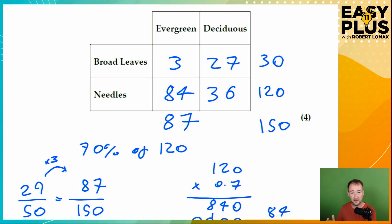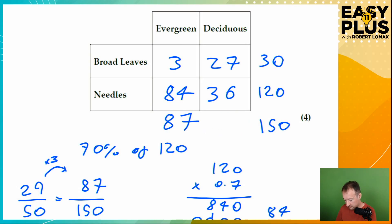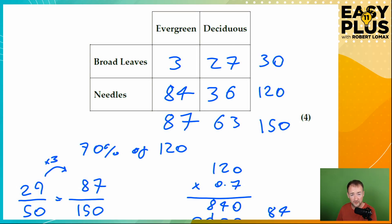Suddenly we have a completely filled-in table. We can also complete the total deciduous entry: 87 plus something equals 150, so that must be 63. That's a really useful cross-check — if we add 27 and 36, that gives us 63, confirming our answer is correct. The beautiful thing about these tables is you can check your answer by adding up along a different axis and making sure everything stacks up accurately.